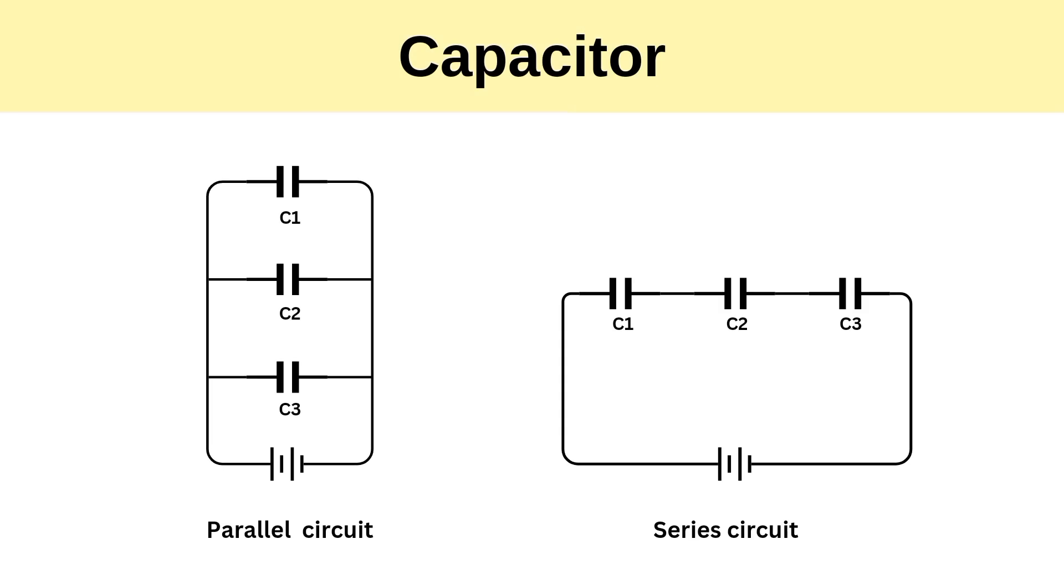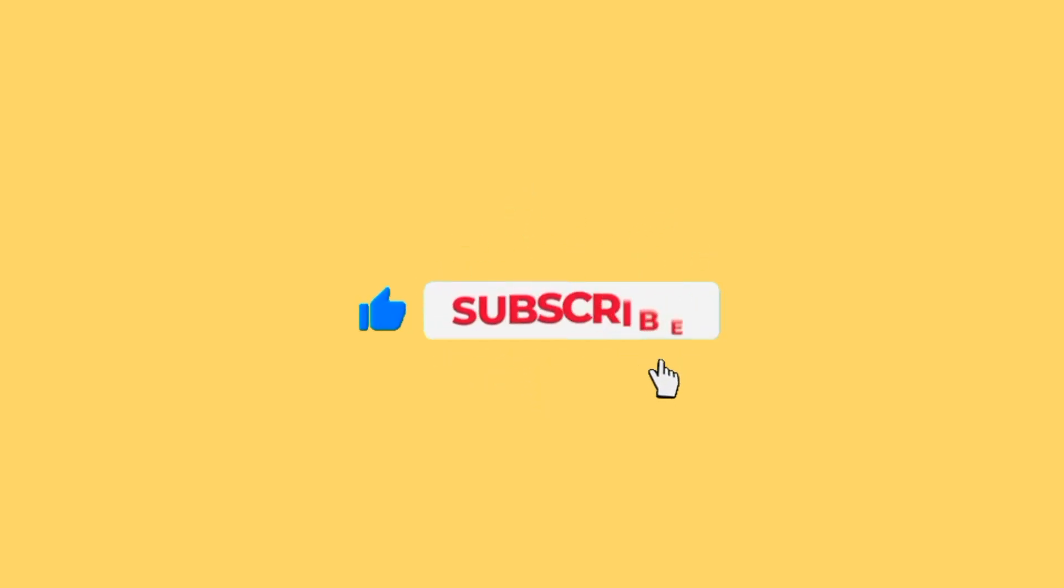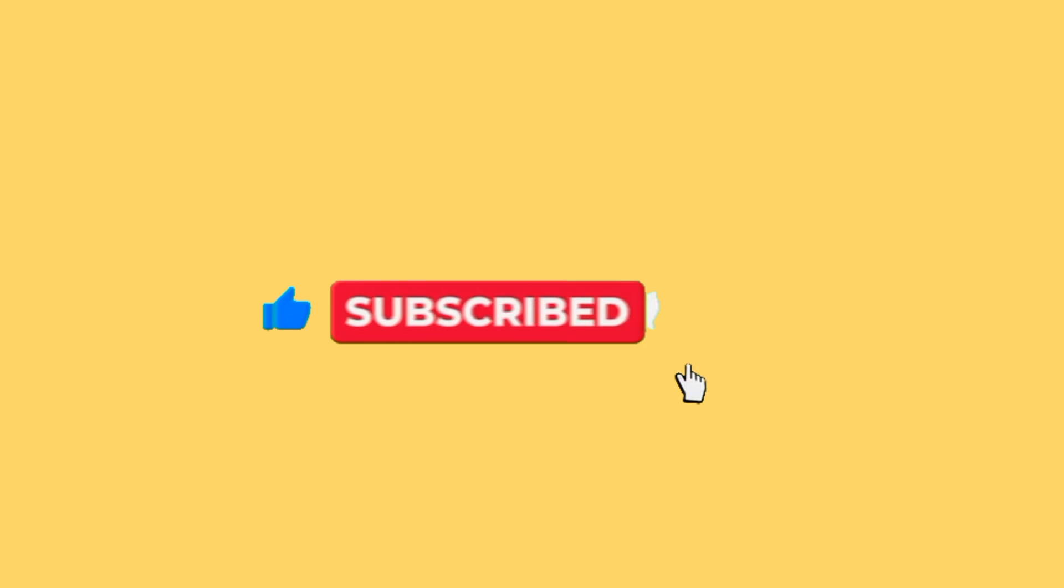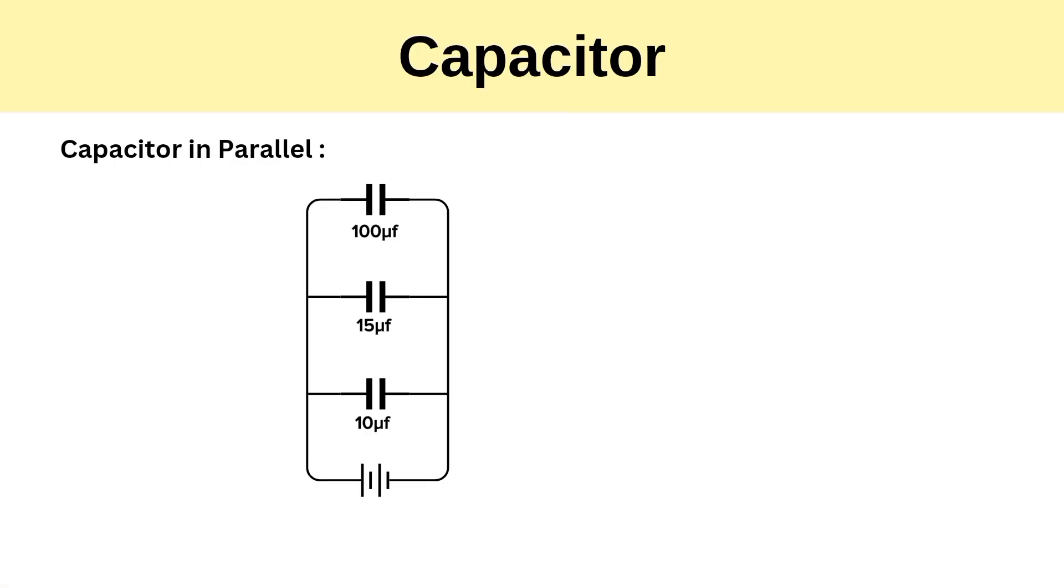Now let's look at capacitors in parallel and series circuits. But before we continue, if you are enjoying this video, please ensure to like and subscribe to the channel. When capacitors are placed in parallel with one another, the total capacitance is simply the sum of all capacitances. The total capacitance is equal to Ct equal to C1 plus C2 plus C3, and so on. It's because every capacitor is supplied independently.